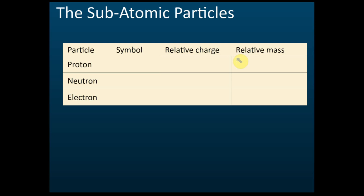We have just learned that there are three subatomic particles: proton, neutron, and electron. In our syllabus, you need to know a few things about them — their symbol, their relative charge, and their relative mass. For protons, the symbol is p; neutron is n; and electron is e.